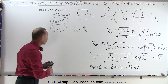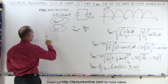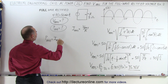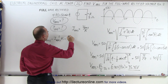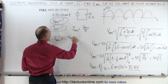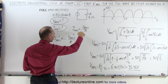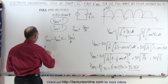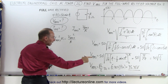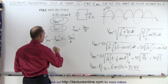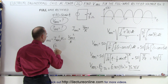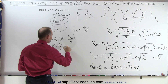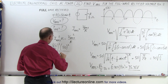Now we need to calculate the average power. Average power is equal to I_RMS squared times R, which can also be written as V_RMS squared divided by R. So the average power is equal to the RMS voltage — which is the square root of 2 over 2 — squared, times 50 squared, divided by the resistance of 8 ohms.